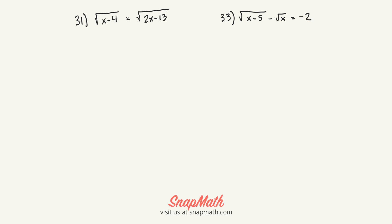The first thing you want to do is square both sides. By squaring both sides, it eliminates both radicals. Then you're just left with x minus 4 equals 2x minus 13.